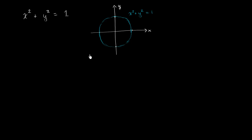What I'm curious about in this video is how we can figure out the slope of the tangent line at any point of this unit circle. What immediately might be jumping out in your brain is that a circle defined this way isn't a function — it's not y explicitly defined as a function of x. For any x value, you actually have two possible y's that satisfy this relationship.